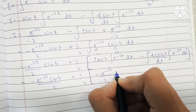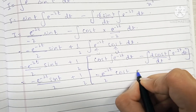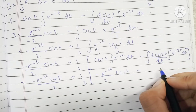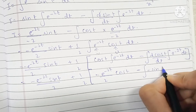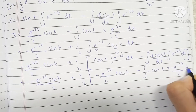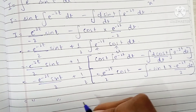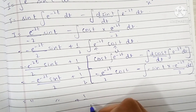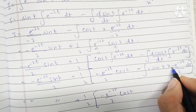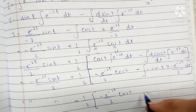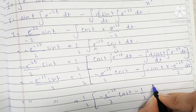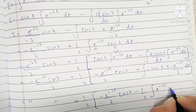This becomes minus e raised to minus 2t sine t upon 2, plus 1 by 2 times minus e raised to minus 2t upon 2 times cos t. The differentiation of cos t is minus sine t, so minus sine t times minus e raised to minus 2t upon 2 — the two negatives become a plus. Taking 1 by 2 outside gives minus 1 by 2 times the integral of e raised to minus 2t sine t dt.